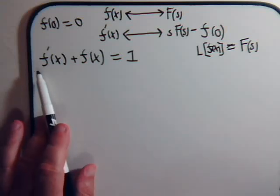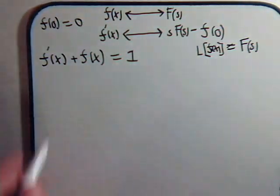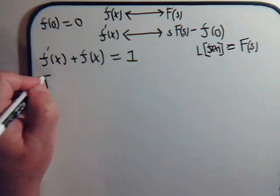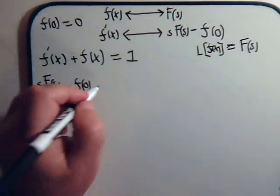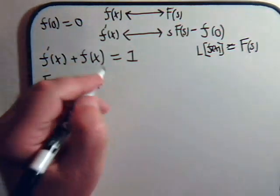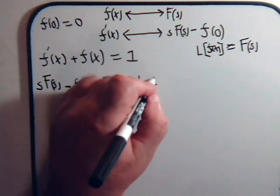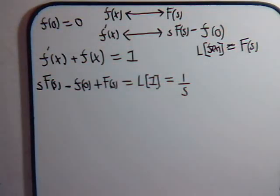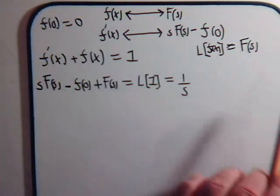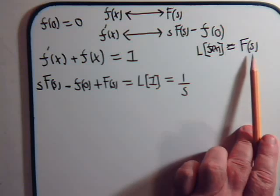Let's go ahead and take the Laplace transform of the entire equation. For the derivative term, we're going to have the expression s times F(s) minus f of zero, plus the Laplace transform of f of x, that's just F(s), equal to the Laplace transform of 1, which equals 1 over s. We don't know what f of x is — that's what we're going to solve for — so we call its Laplace transform simply F(s).